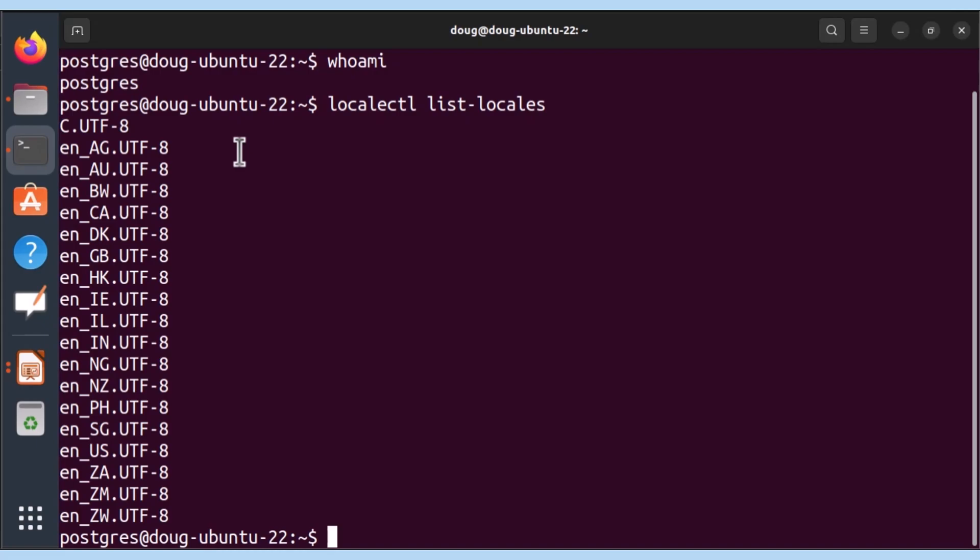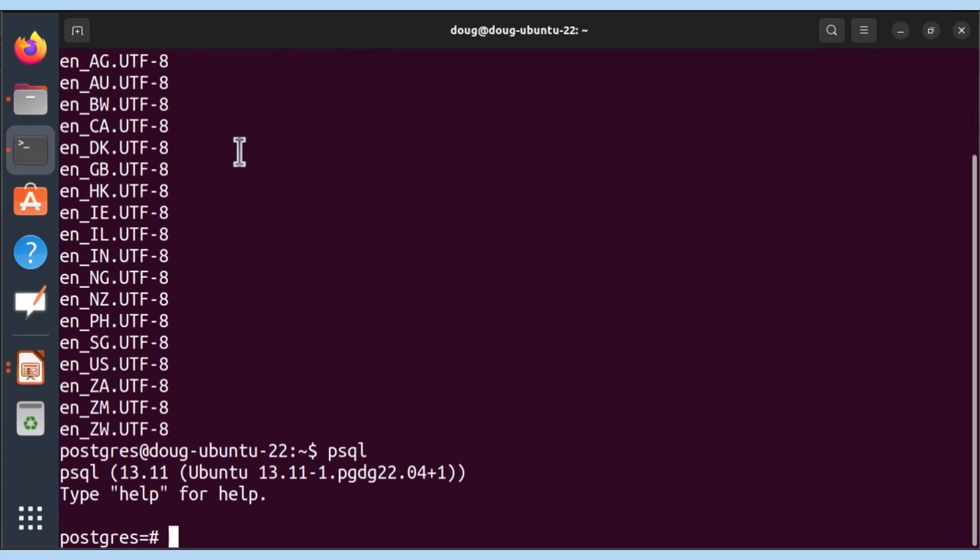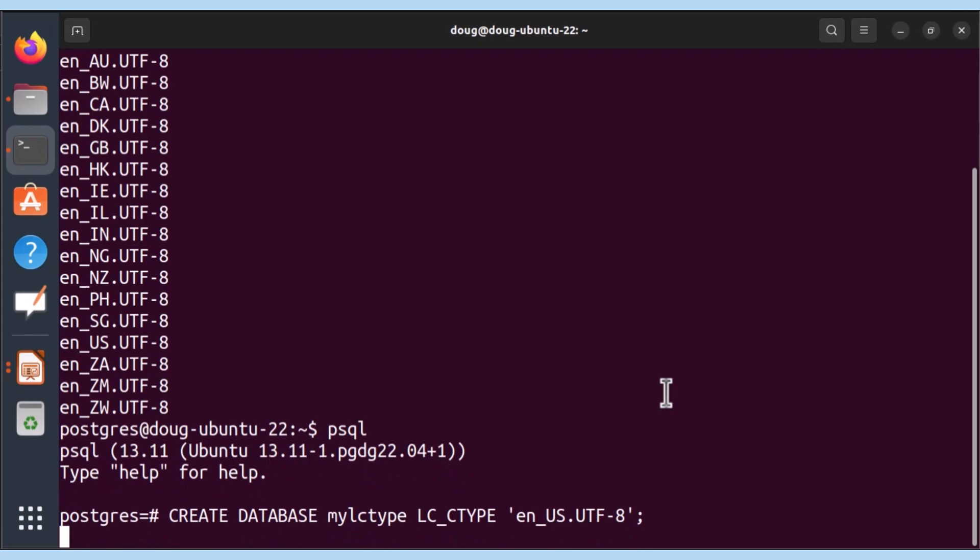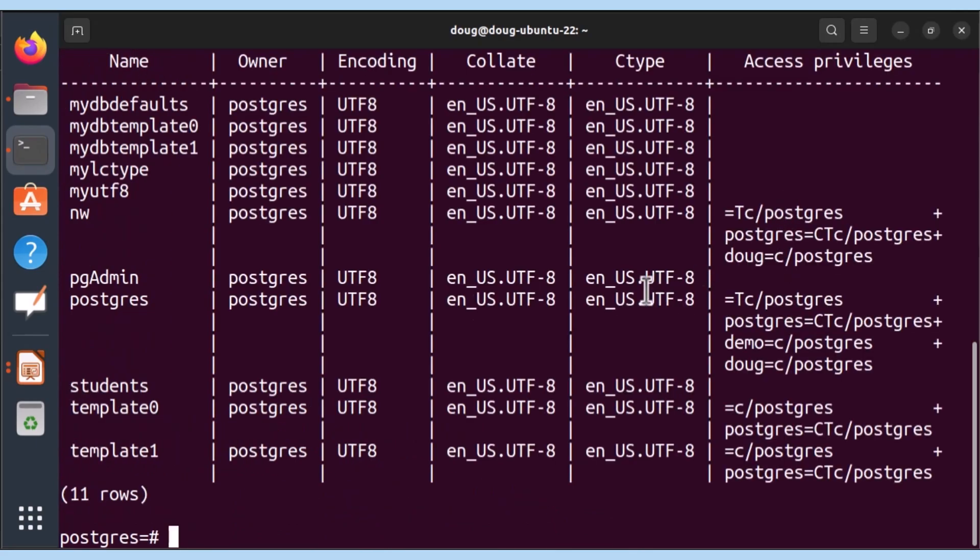So, now that we know these are installed or available in our OS, we can leverage them when we use them inside PSQL. In this case, I'm going to create a database called mylctype. I'm going to indicate the ctype and utilize us.utf-8. Remember, this came from up here, indicating that we have it available. Success. Let's list the databases. Mylctype should be available there. And as mentioned before, we have our ctype of en-us.utf-8. That is how we leverage lctypes in Postgres with a database.